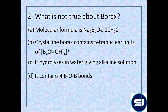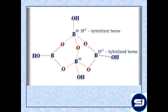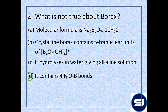Regarding option D — does borax contain four B–O–B bonds? No. This structure has five B–O–B bonds. In the borax anion unit, four boron atoms are linked via oxygen atoms and each boron is linked to OH groups, giving the formula [B4O5(OH)4]²⁻. Two boron atoms are SP3 hybridized and two are SP2 hybridized. The number of B–O–B linkages is five, not four. Correct answer is option D.